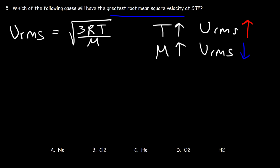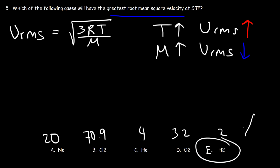Think of it like vehicles on a highway — a small sports car moves fast easily, but a big heavy truck tends to move slower. Similarly, light molecules move fast and heavy molecules move slow. Now finding the molar mass of each gas: neon is about 20, Cl₂ is about 70.9, helium is 4, O₂ is 32, and H₂ is about 2. So the answer is hydrogen gas — it has the greatest root mean square velocity at STP because it has the lowest molar mass.